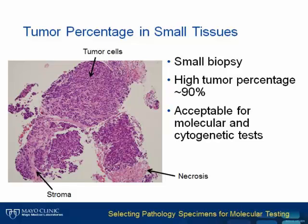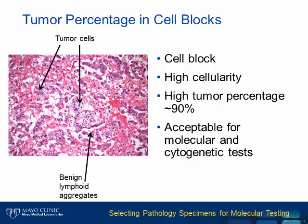Here is an example of a much better small specimen. This tissue has a little bit of stroma and a little bit of necrosis. However, the vast majority of the nucleated cells are tumor cells, and this would be acceptable for most tests. The same metrics apply when you look at cell blocks. In this particular case, the cells in this block are mostly tumor cells — approximately 90% — and there are a lot of them, so this would be acceptable for most methods.